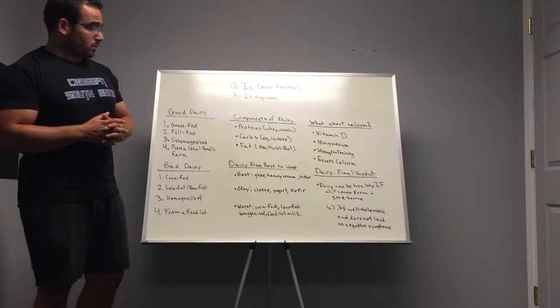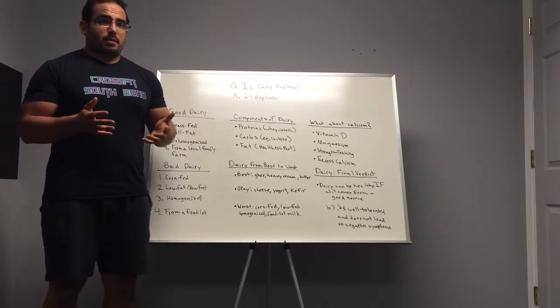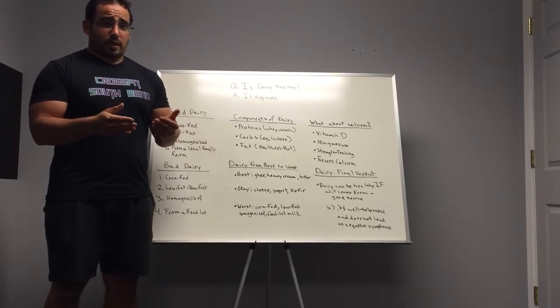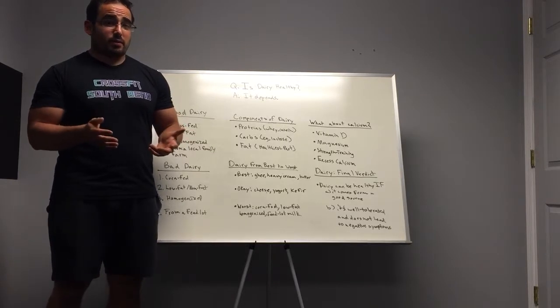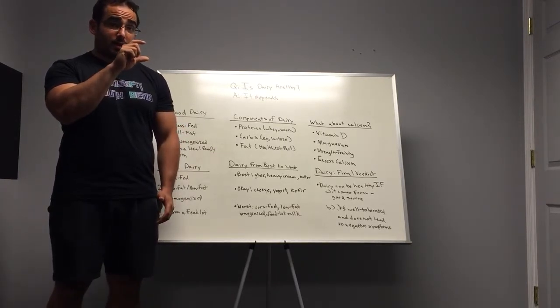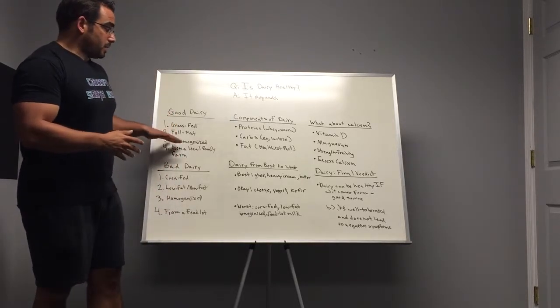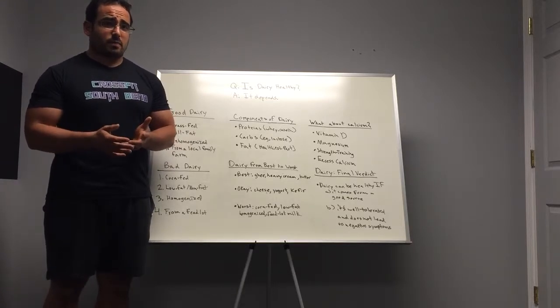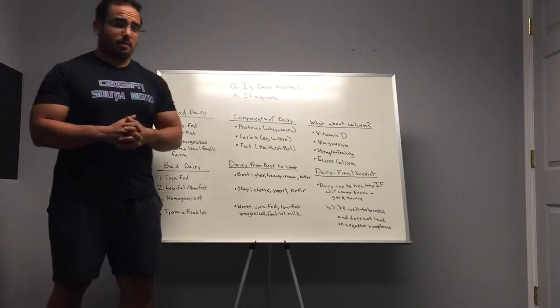You want to have dairy that's unhomogenized. This one isn't quite as important as the first two, but homogenized dairy just means that it's been passed through a filter so that it's all the same. If you've ever talked to your grandparents about the milk deliveries they used to get, they say the milk that they used to have had a cream top and had little bits of cream in it. The homogenization process makes dairy a little bit harder to digest for some people. So in general, you want to get it less processed and unhomogenized.